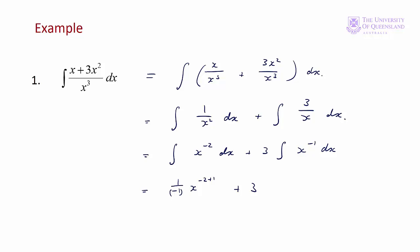We know that the integral of 1/x equals ln|x|. So the final answer is -1/x + 3ln|x| + C.